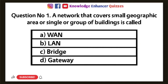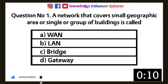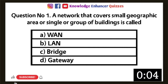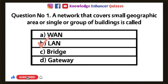Question 1: A network that covers a small geographic area or single or group of buildings is called — Option A: WAN, Option B: LAN, Option C: Bridge, Option D: Gateway. Option B is the right answer.